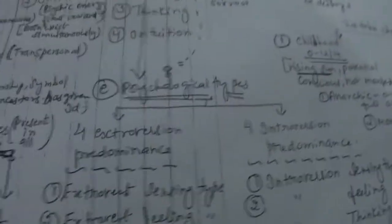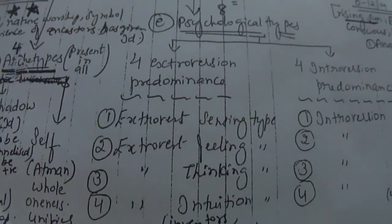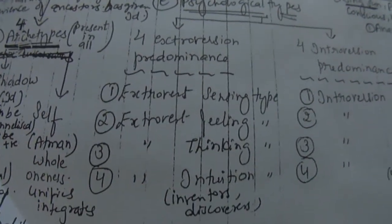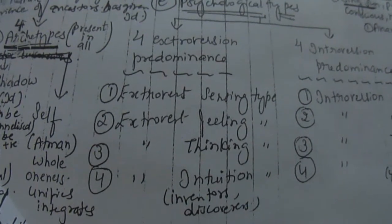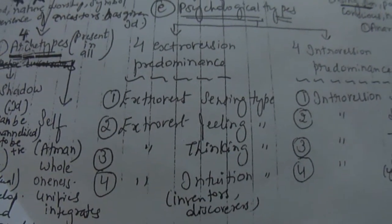And then depending on this, eight psychological types. Four extroversion predominance: extrovert sensing, extrovert feeling type, extrovert thinking type, extrovert intuition type.